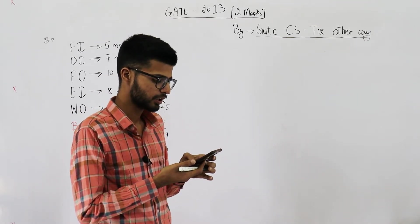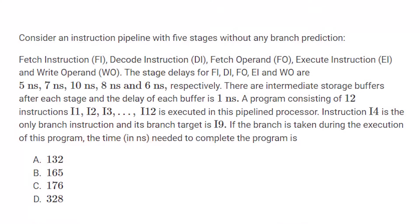Consider an instruction pipeline with five stages without any branch prediction: Fetch instruction, decode instruction, fetch operand, execute instruction, and write operand. The stage delays for FI, DI, FO, EI and WO are 5, 7, 10, 8, and 6 nanoseconds respectively.